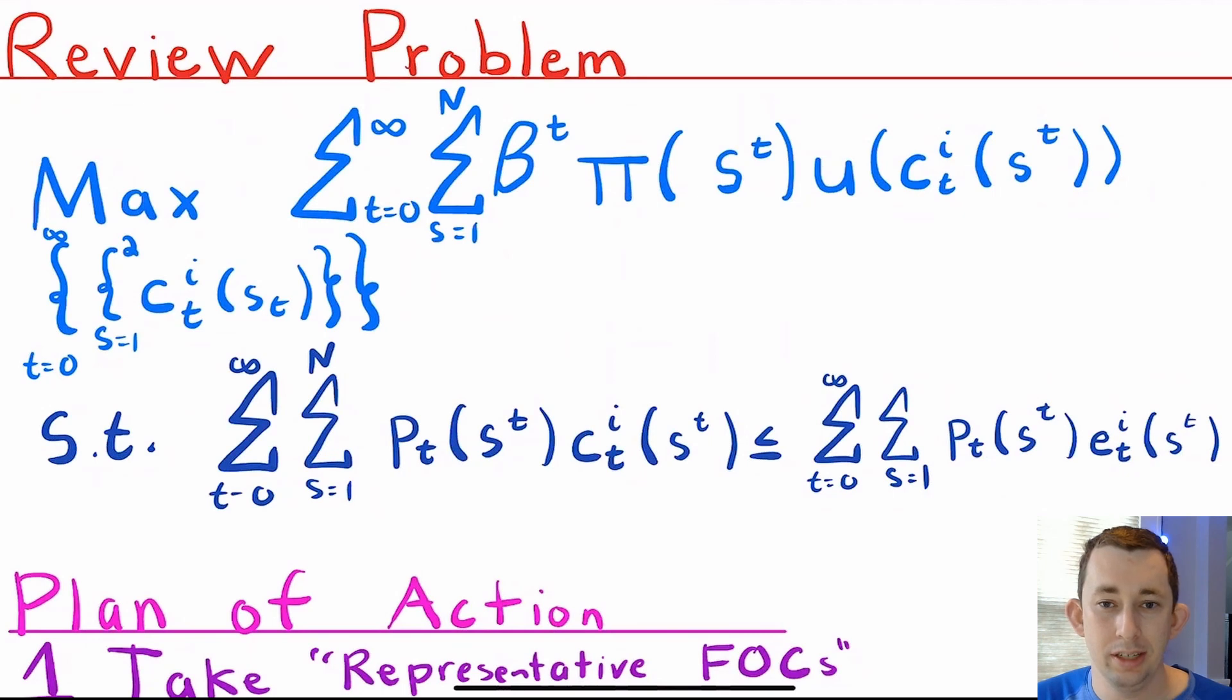From that last video, here's the utility maximization problem we're trying to solve for Bill and Dave. The problem is two infinite sums. The outside infinite sum is for t equals zero to infinity and the inner sum is from s equals one to n. In our problem we just have two states of nature so it'd really be one to two. We have our normal beta t for time discounting, the probability of each event history, and the utility of the consumption for each person in each event history. And then we have our infinite budget constraint, all of which we talked about last time.